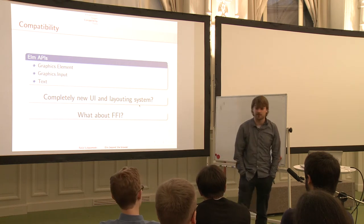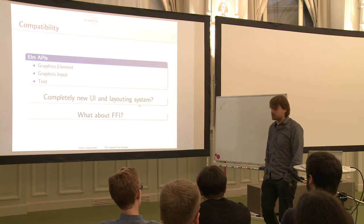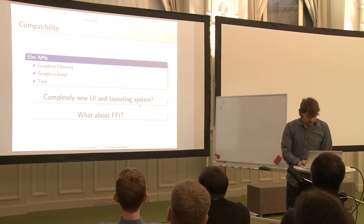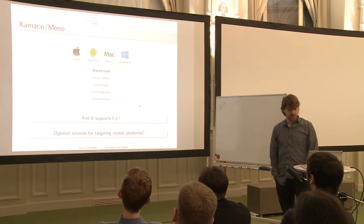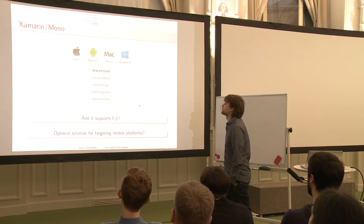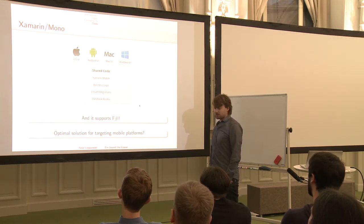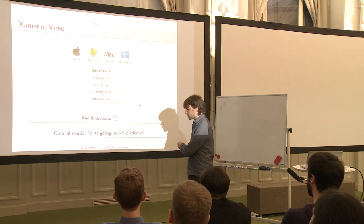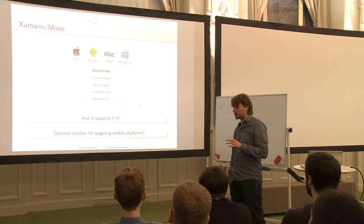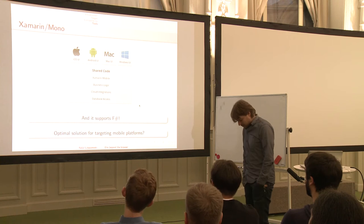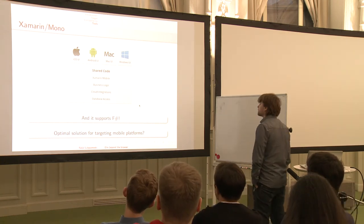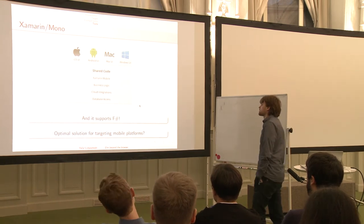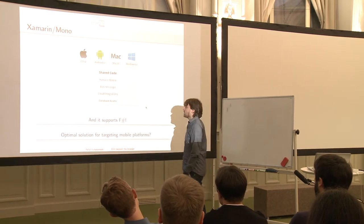We want to get native performance on mobile devices because that's where the market is right now. Back to the promising technology — there's a company called Xamarin. They are maintaining the whole Mono framework and have created frameworks based on Mono and CLR for the most important mobile devices. Their strategy is to give users an API for iOS and Android.